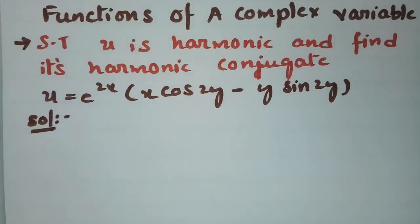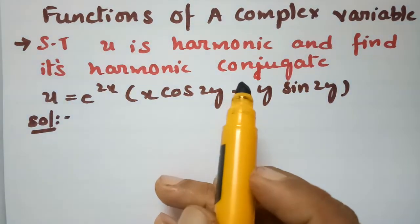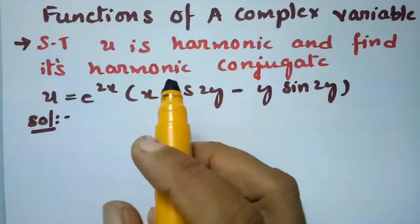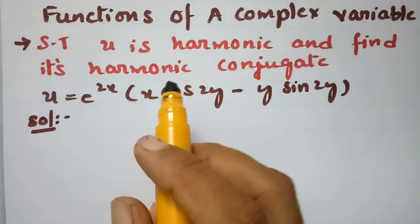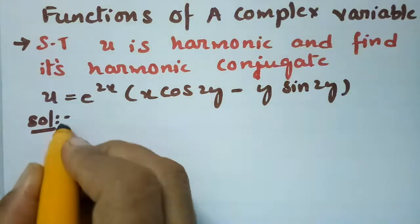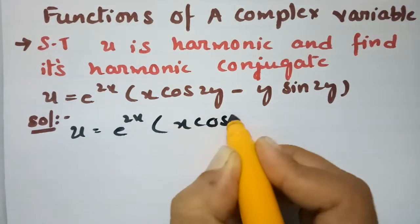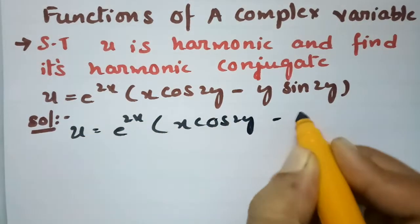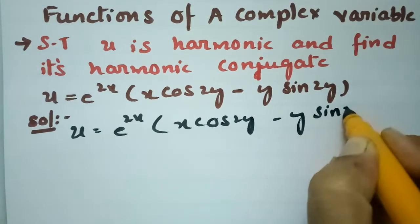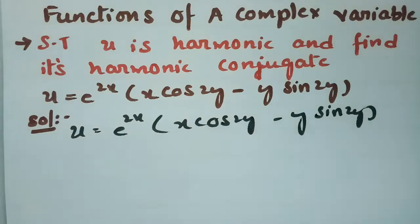Today's video I am going to explain a problem from functions of complex variables. We have to show that u is harmonic and also find the harmonic conjugate. For u, the harmonic conjugate will be v. What is given: u is equal to e^(2x) times (x·cos2y − y·sin2y). In order to show it is harmonic, it should satisfy the Laplace equation.